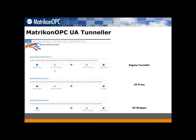We have now included two extra functionalities in the tunneler called UA Proxy and UA Wrapper. These functionalities are designed to integrate OPC classic architectures with OPC UA. For example, the UA Proxy allows us to communicate any OPC UA server with an OPC classic client application. If you have a SCADA using OPC classic, you can communicate with an OPC UA server embedded in a PLC by placing the tunneler together with the SCADA.